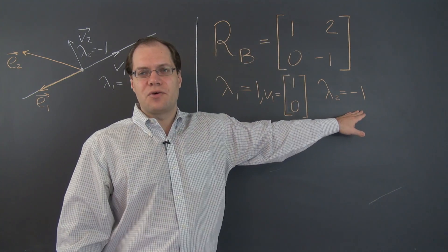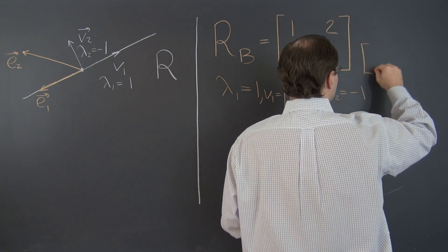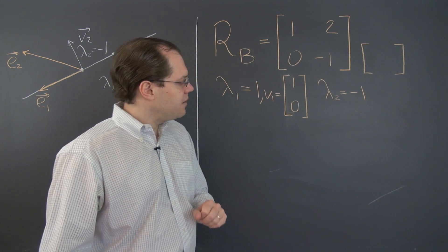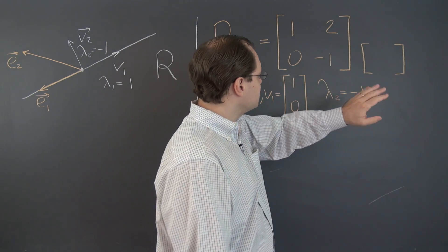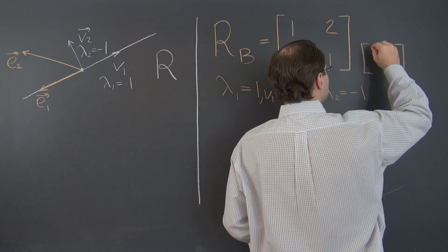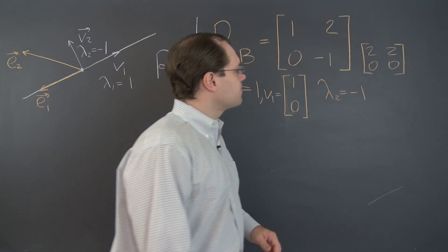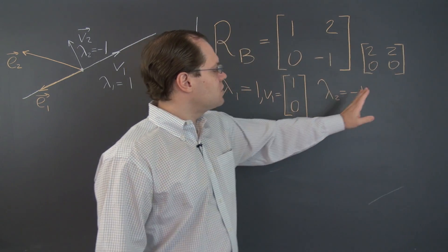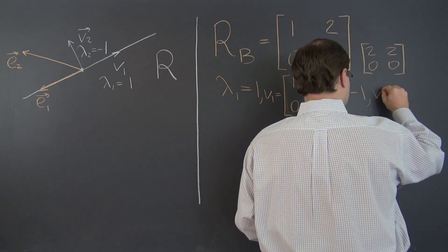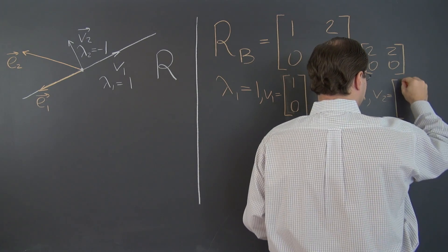The second eigenvector requires a little more work. For eigenvalue negative 1, we subtract negative 1 from the diagonal, giving us the matrix with 2, 2, 0, 0. The eigenvector corresponding to this eigenvalue, V2, is (1, negative 1).